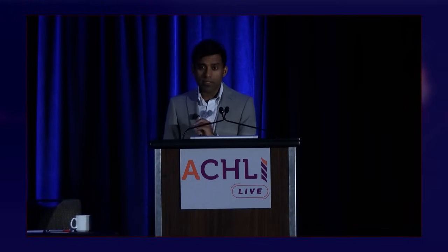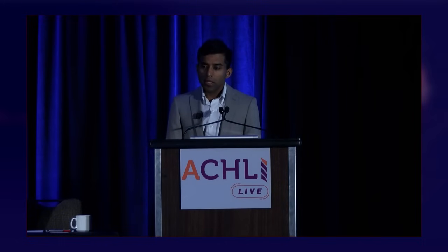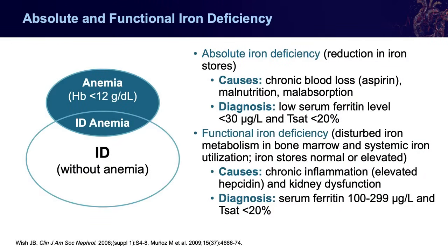For diagnosis, absolute iron deficiency — from chronic blood loss, malnutrition, or malabsorption — is diagnosed by reduced iron stores, with serum ferritin markedly reduced, often less than 30. Functional iron deficiency is when stores appear normal — ferritin between 100 and 300 — but the iron's ability to be utilized is reduced, measured by transferrin saturation (T-sat) less than 20 percent.